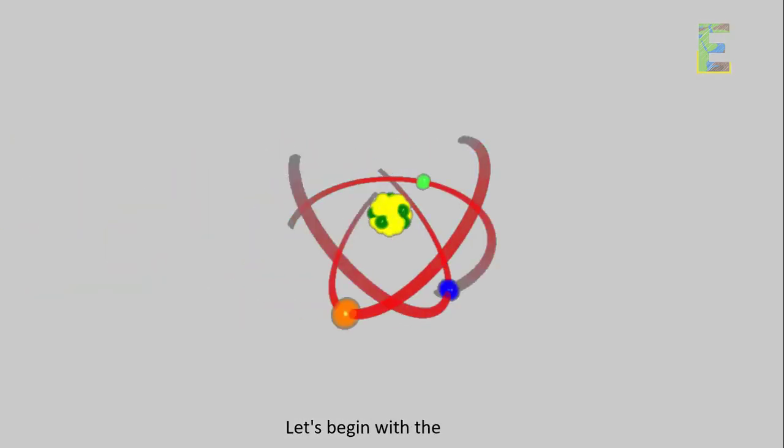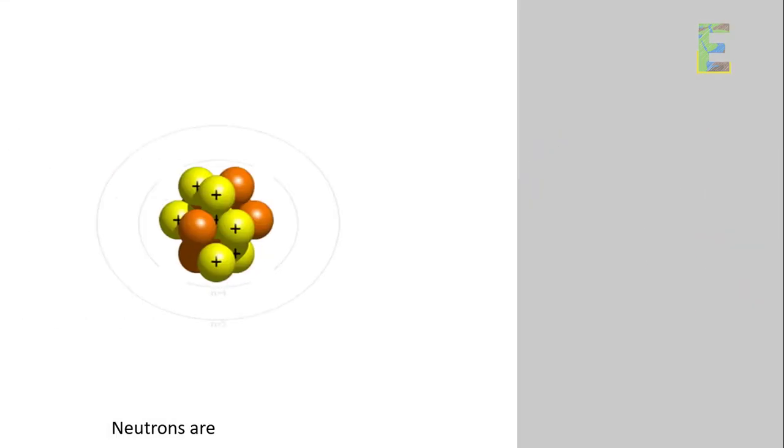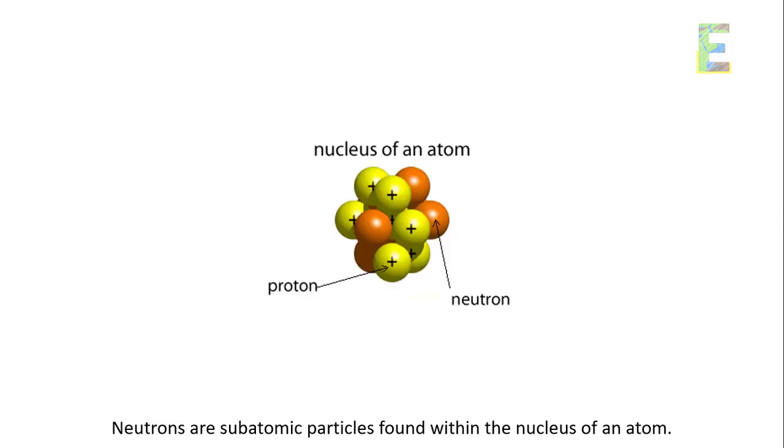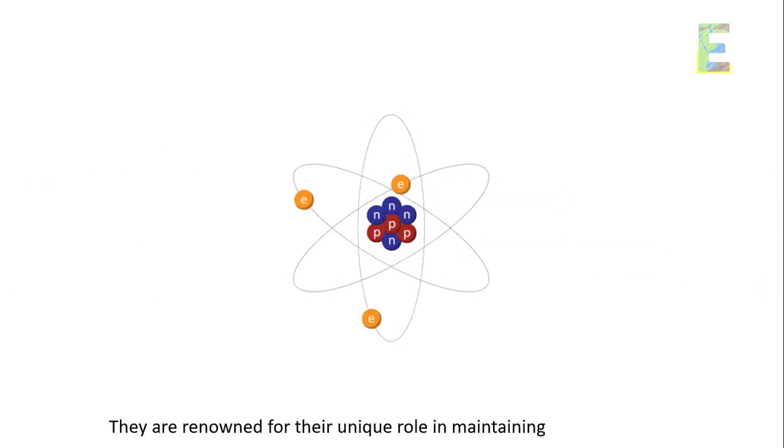Introduction to neutrons. Let's begin with the basics. Neutrons are subatomic particles found within the nucleus of an atom. They are renowned for their unique role in maintaining atomic stability.